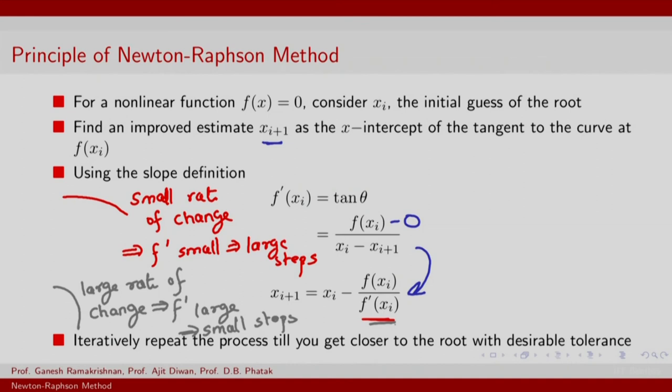This is actually quite intuitive. If the function is changing very slowly, you might want to move fast. If the function is changing too rapidly, you might want to move very slowly. Basically, you do not want to miss the root in the second case and you do not want to take too long to get to the root in the first case.